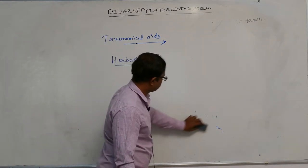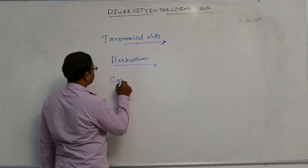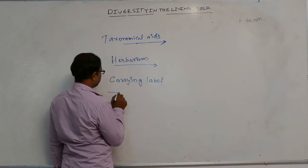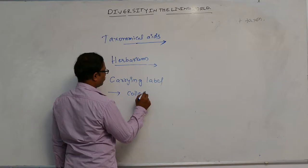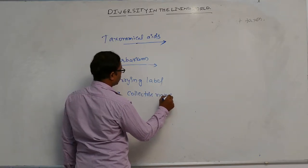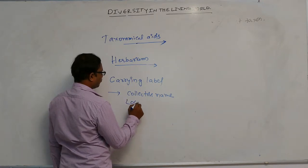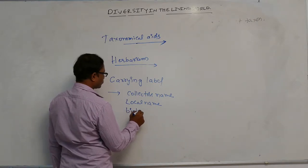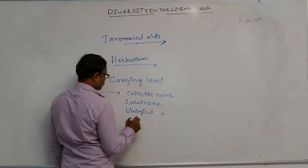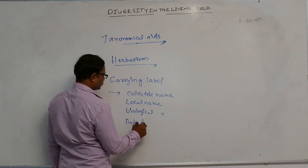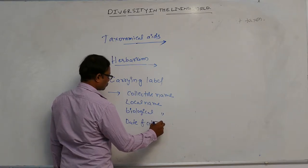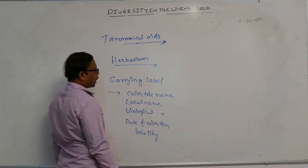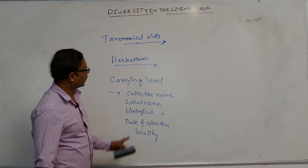Herbarium sheets carry a label providing the collector's name — who collected the plant. Other information includes the plant's local name, biological name, date of collection, and locality or location. All these points are present on the herbarium sheets.